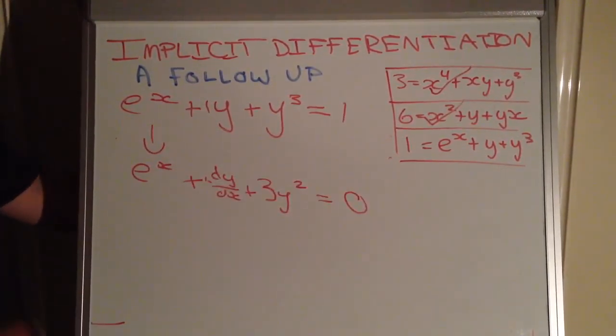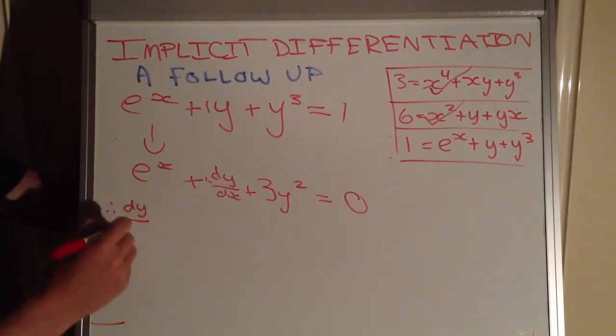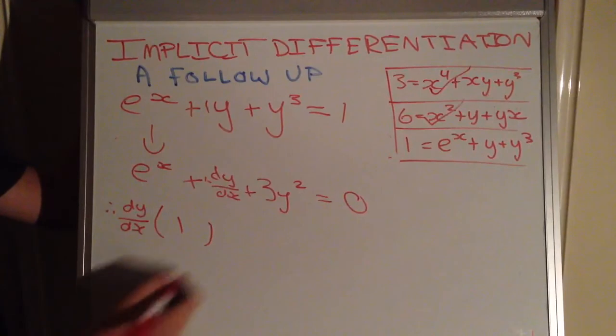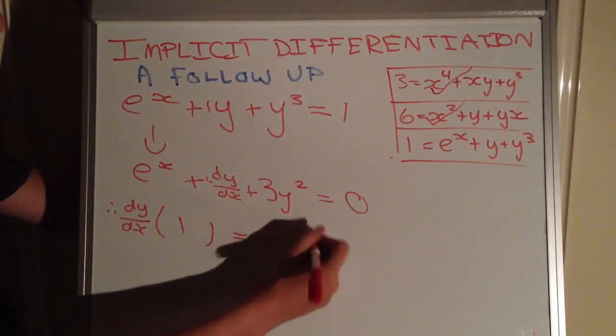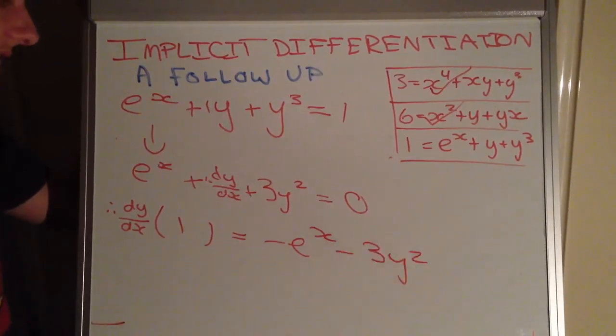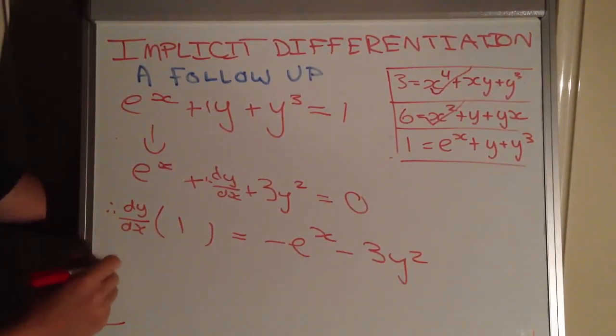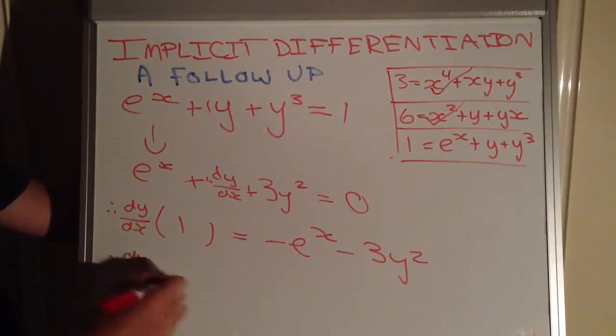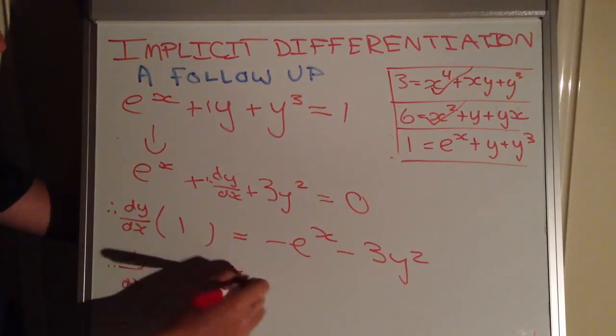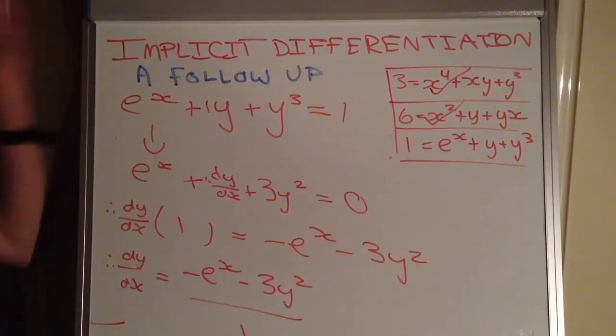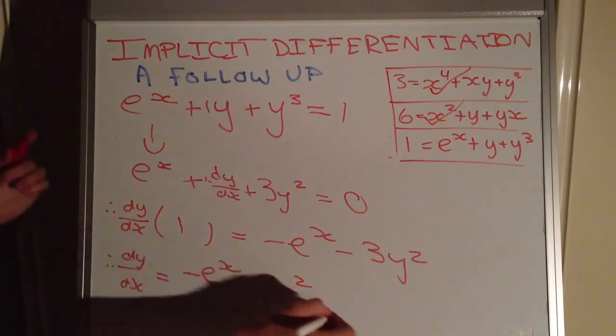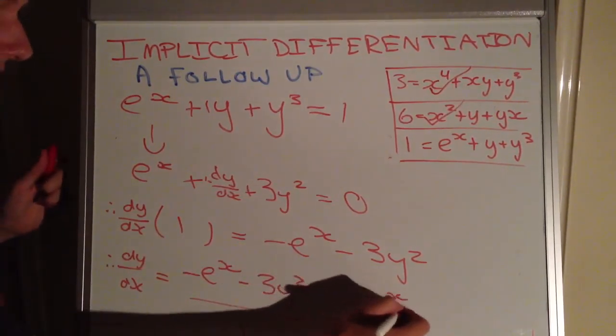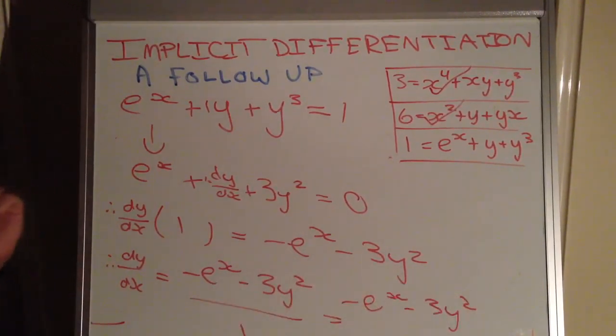So we leave the dy dx term on this side. It's 1 dy over dx. And then we simply inverse the operations on the other side. And then we bring this term in the numerator on the left-hand side into the denominator on the right-hand side. So we get negative e to the x minus 3y squared all over 1. Okay, wait, it's over 1. It's easy to simplify. May as well go ahead and do it. Because anything over 1 is itself. 5 over 1, 5. 6 over 1, 6. A million over 1, a million.